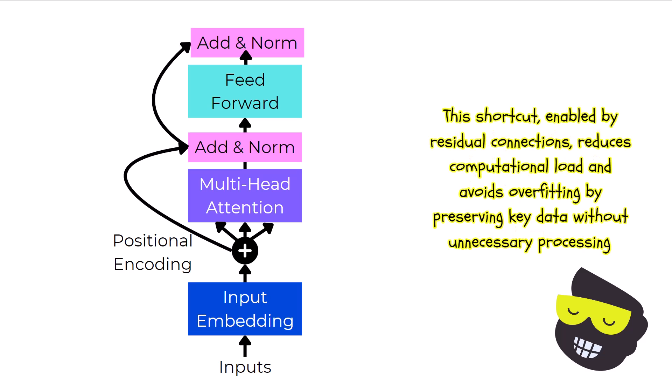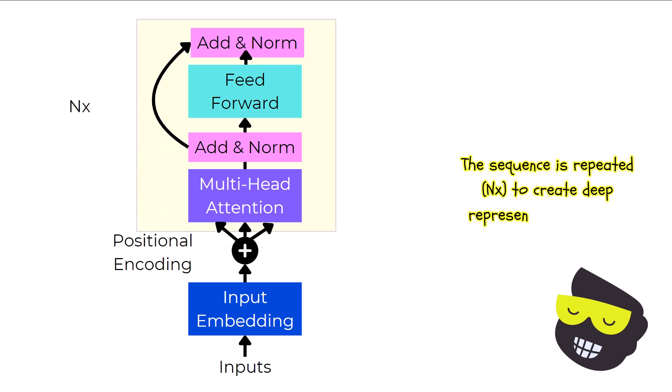In some cases, the models may skip the multi-head attention and feed-forward layers. This bypass occurs when the direct input or previously refined information is already sufficient, making further processing unnecessary. This shortcut, often facilitated by the residual connections in the add-a-norm layers, helps in reducing computational load and preventing overfitting by not overcomplicating the process of well-understood data. The sequence of multi-head attention at the normative forward layers is repeated multiple times, and this is denoted by the NX, to build deep representations of the input layer.